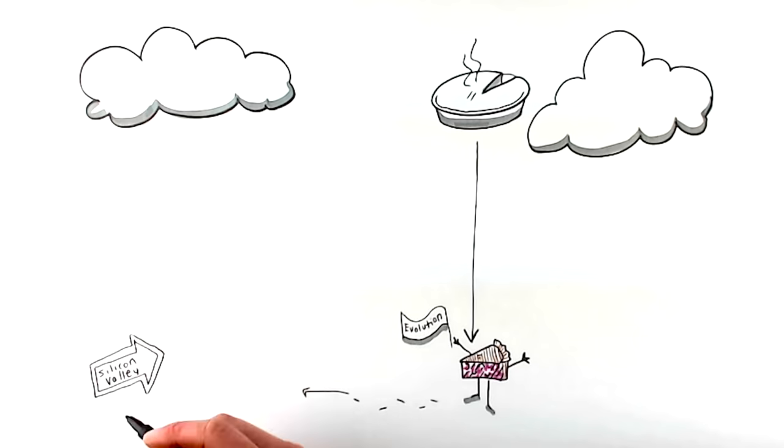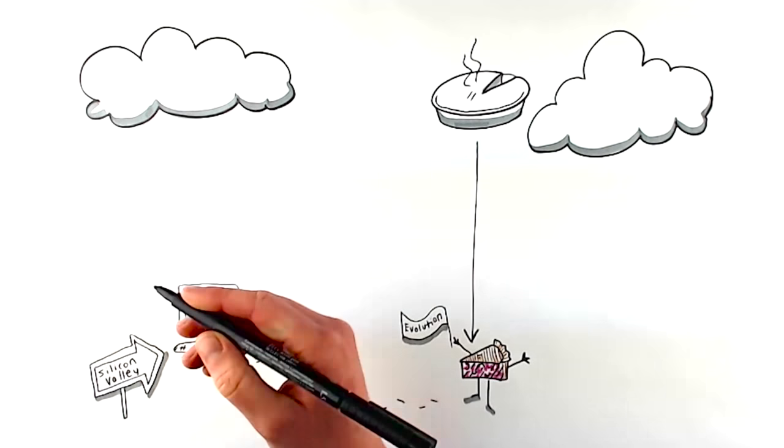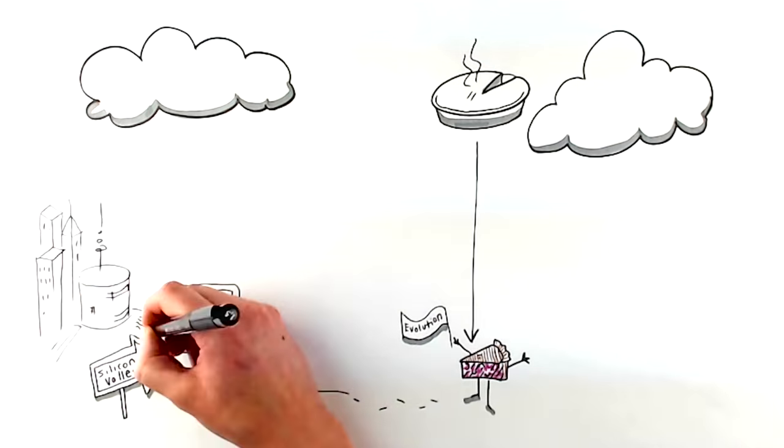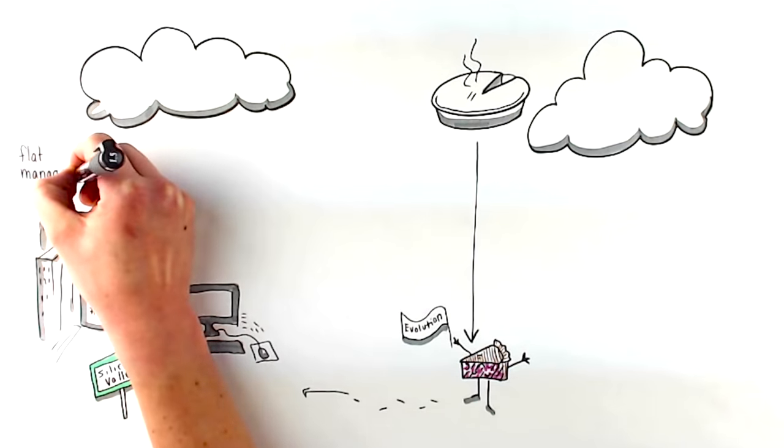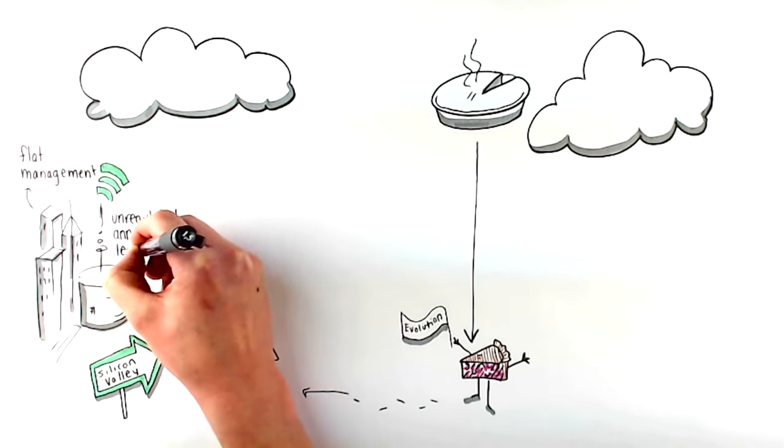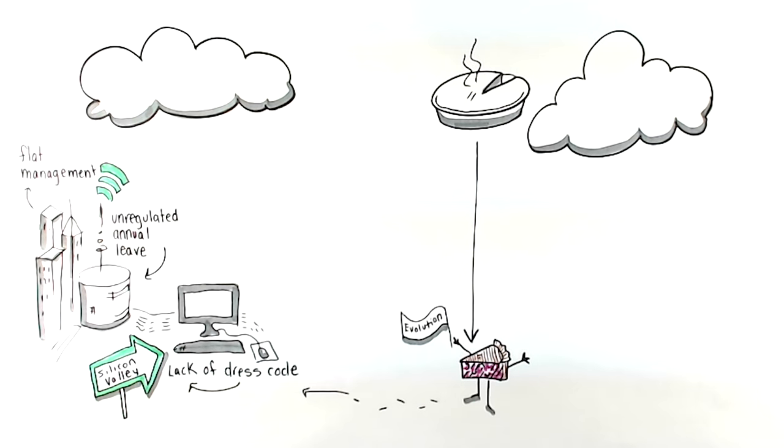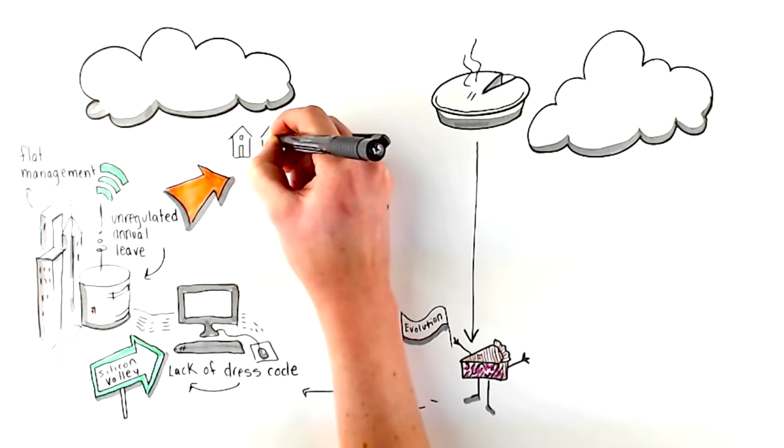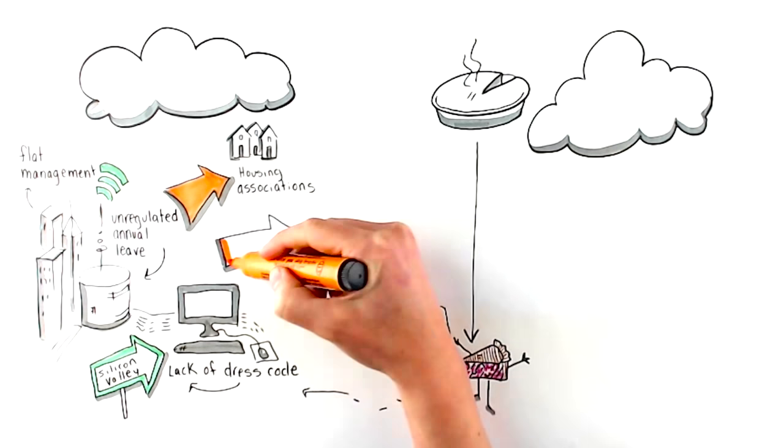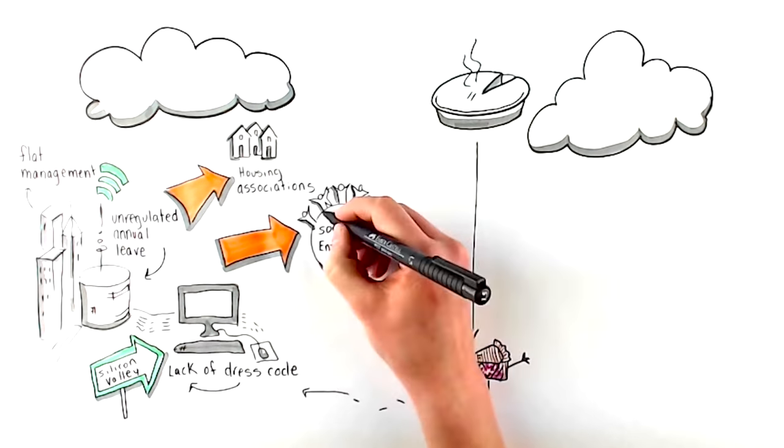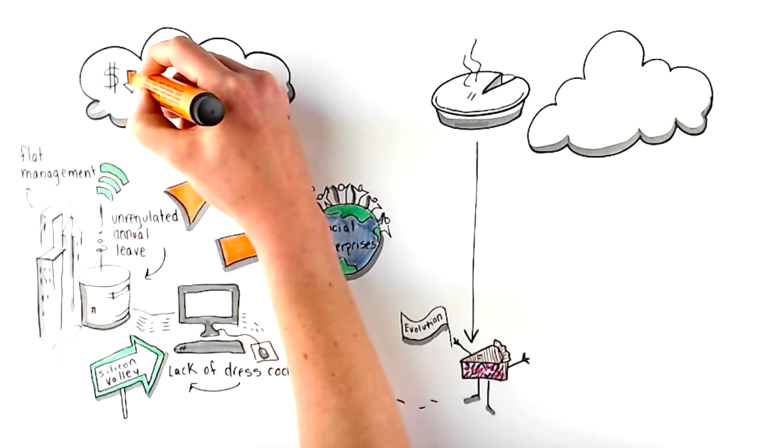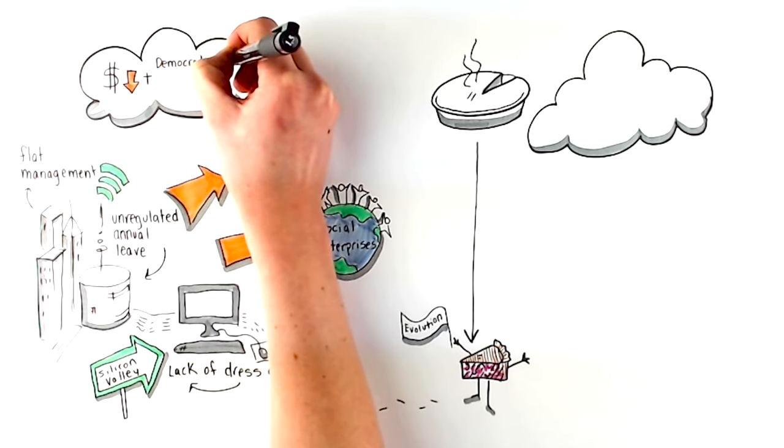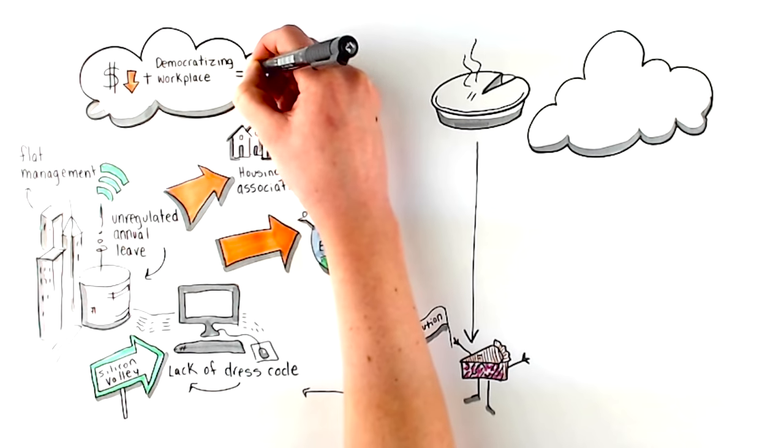Check out Silicon Valley. It is brimming full of multi-billion dollar tech companies which operate along these lines, with their flat management structures, unregulated annual leave, and general lack of dress codes. This approach isn't just being practiced in tech. There are housing associations and social enterprises the world over. There are manufacturing companies which have brought their trade from financial downfall back to boom by democratizing their workplace.